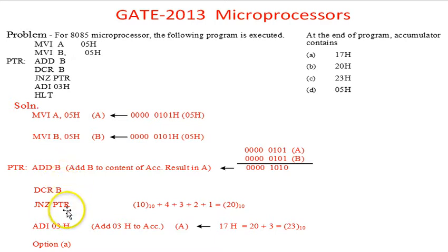When it becomes 0, it comes out of the loop and then it says ADI 03H - add immediate 03 to the content of the accumulator.